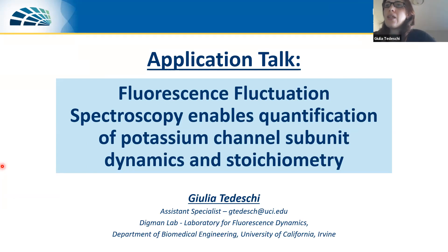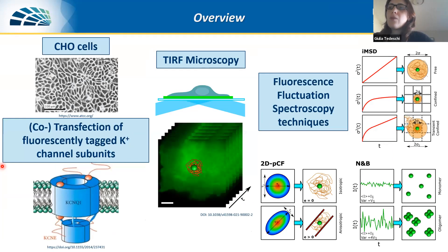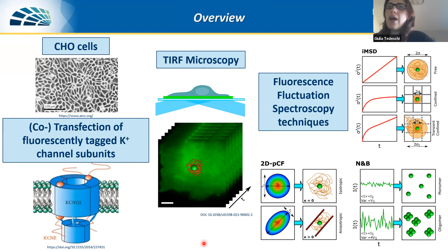This is going to be the topic of my application talk. So just an overview: in this work, we were using CHO cells, Chinese hamster ovary cells. We were transfecting or co-transfecting those cells with subunits of potassium channel — they were fluorescently tagged. To study their dynamics and oligomerization state, we were using TIRF microscopy, getting illumination and signal only from the membrane. Our time-lapse data was then analyzed with three different fluctuation techniques: IMSD, number and brightness, and 2D pair correlation.